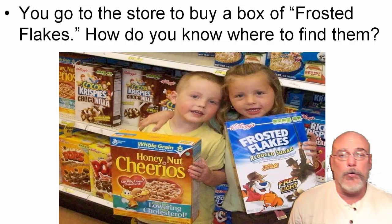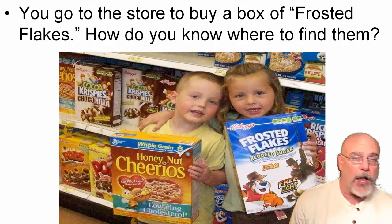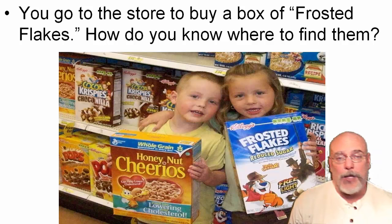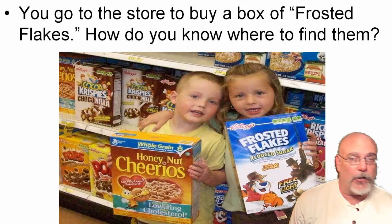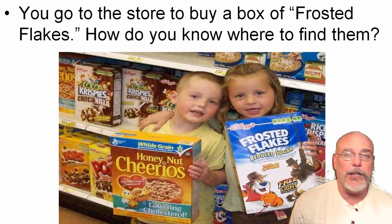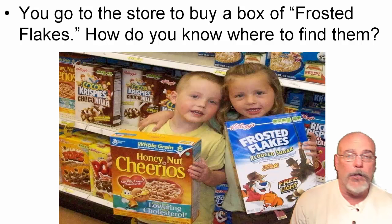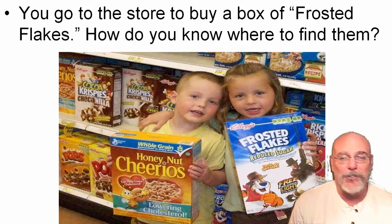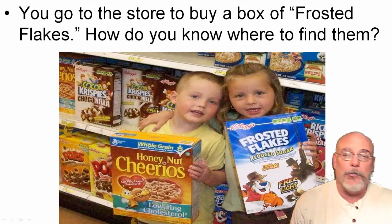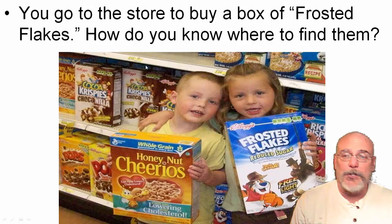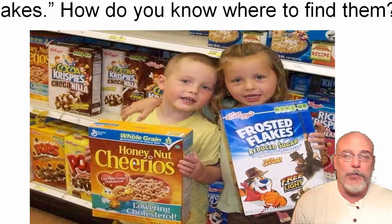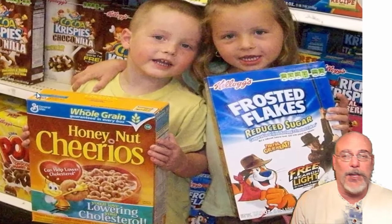Think about the way that stores organize the items they offer for sale. Cereal would be in the cereal aisle, pasta would be in the pasta aisle, soups and canned foods and vegetables — they all have their own aisle. If you look at this picture, you can see all the different kinds of cereal here — all the kids' cereals. When you go to the grocery store, check this out: all the sugary sweet stuff is going to be near the bottom so kids can see it.